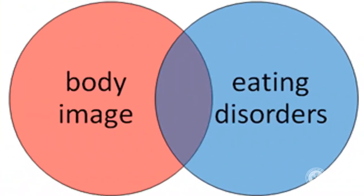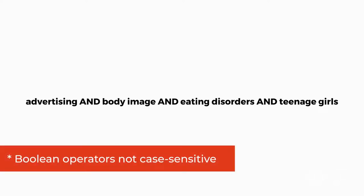Boolean AND narrows a search to those items containing both terms, as represented by the darkest area in this diagram. The results list would consist of only items which have both terms. Items which mention only body image will not be displayed, nor will items which mention only eating disorders without reference to body image. You can combine multiple words and phrases in a Boolean search — for example: advertising AND body image AND eating disorders AND teenage girls.